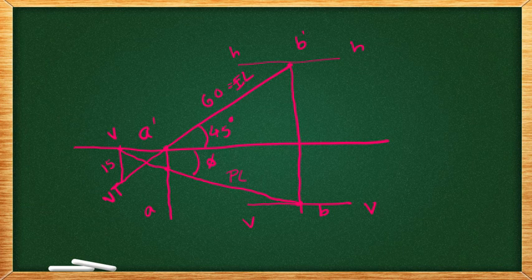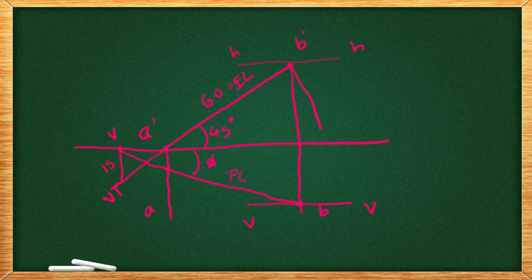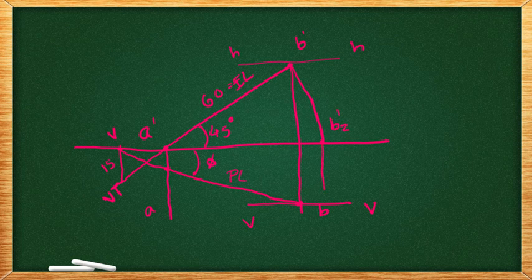Further we have to rotate. We have b2 dash here and dropping it towards this locus. So, we have b2. This point is b2.